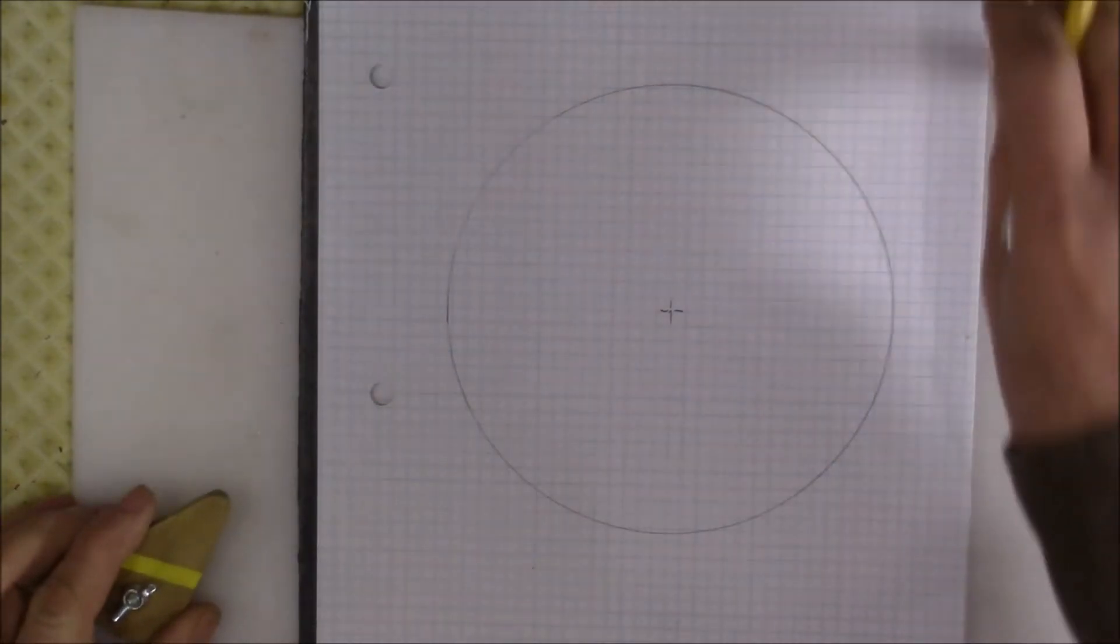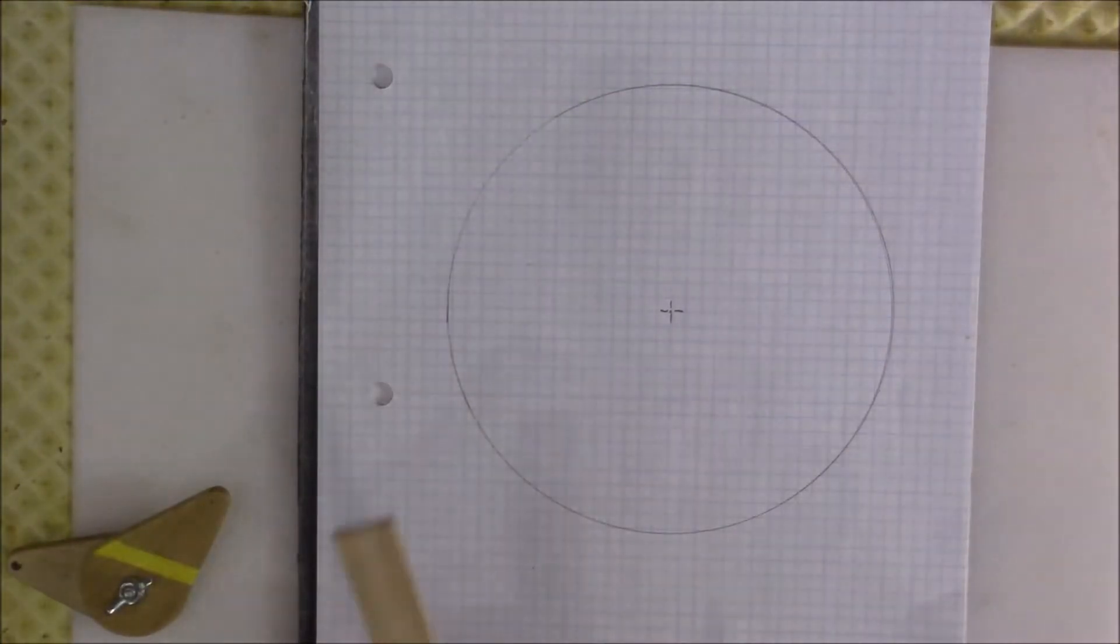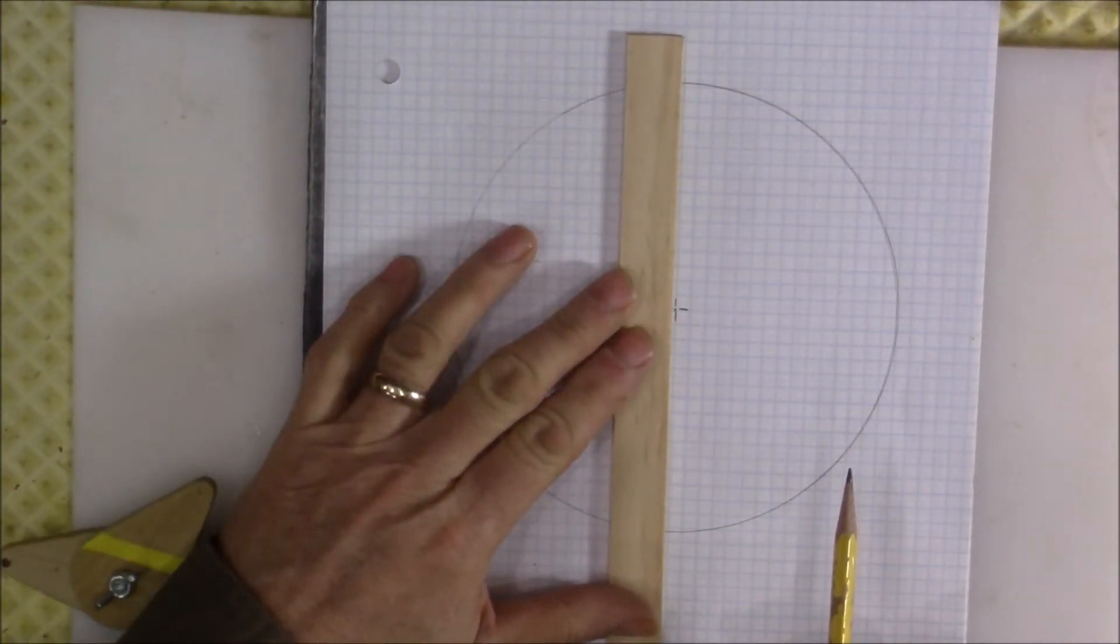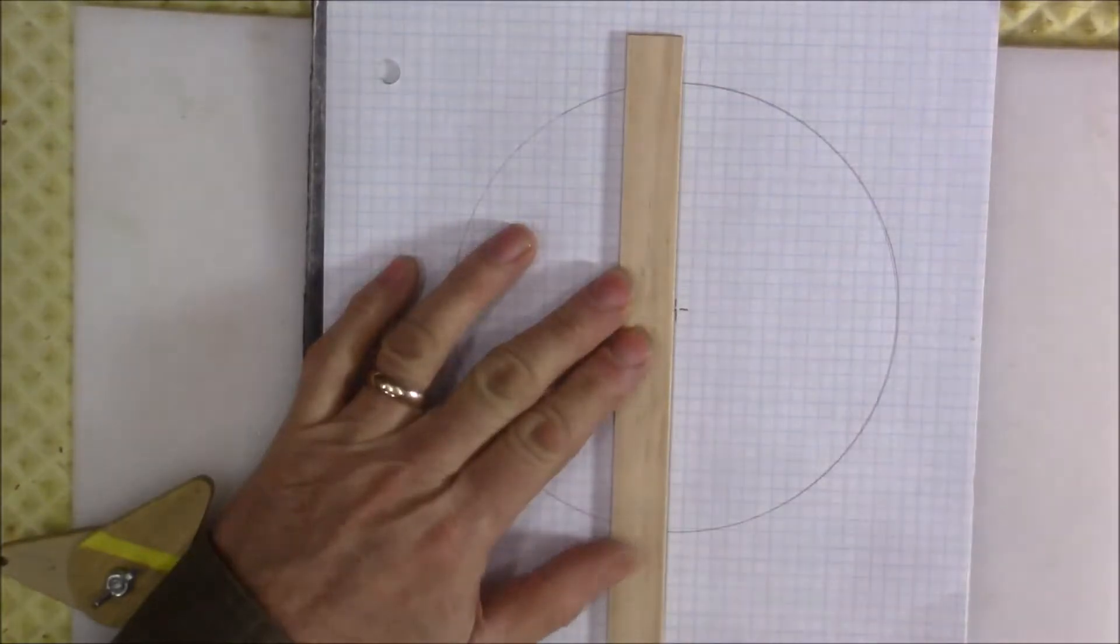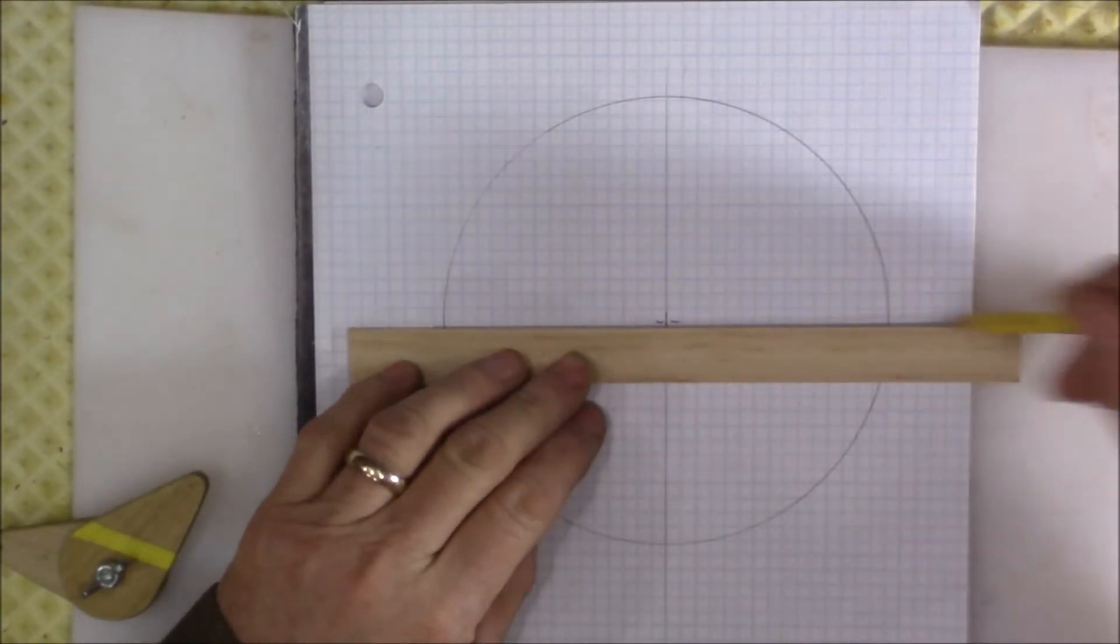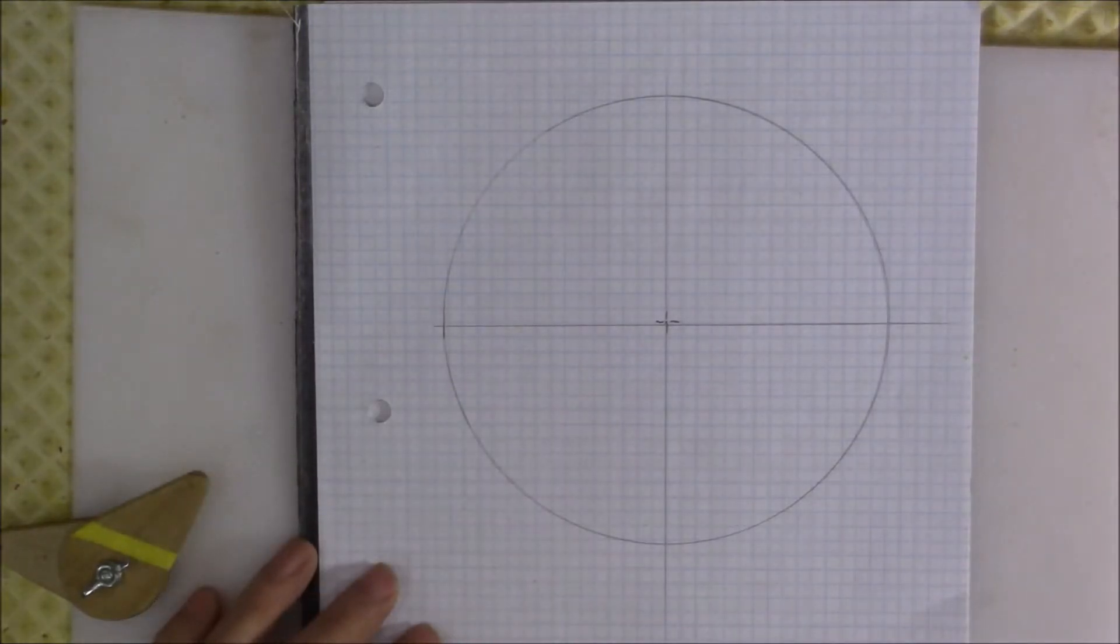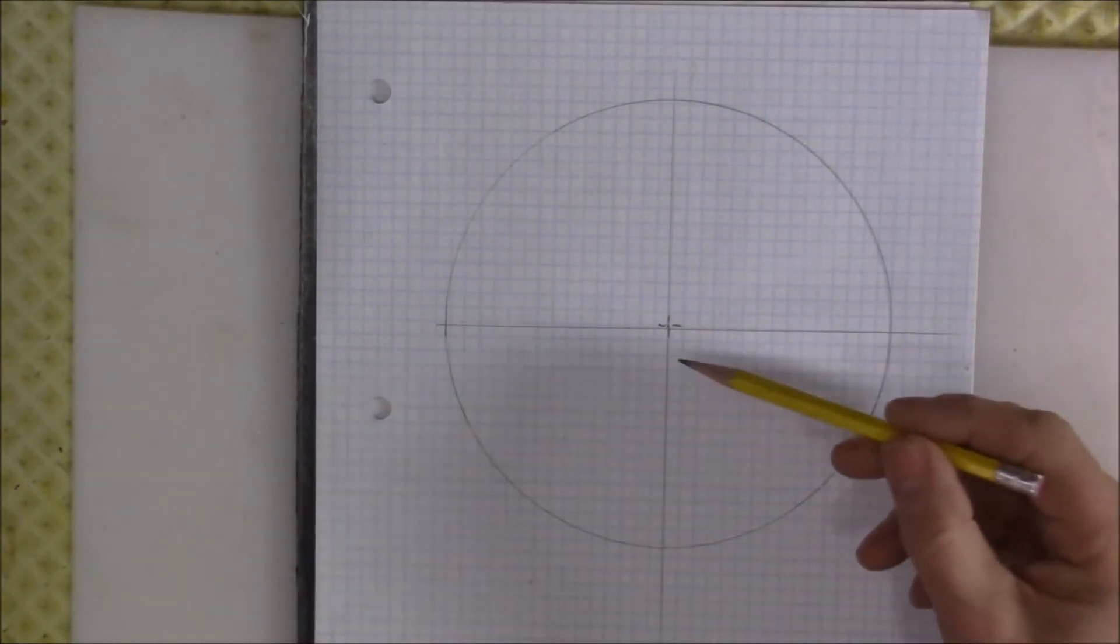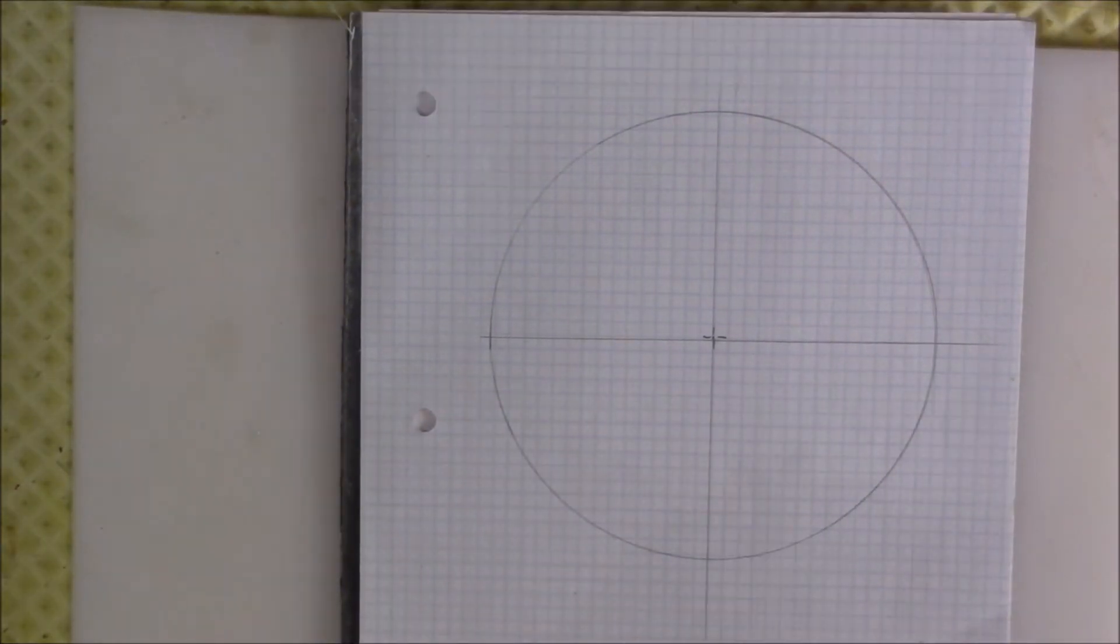Start with your center. Come across the center this way, come across the center that way, and then with a compass find your radius.